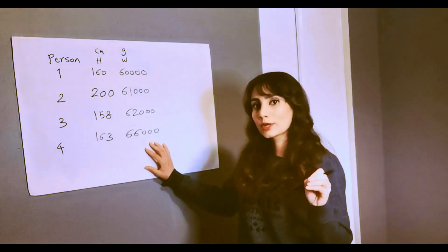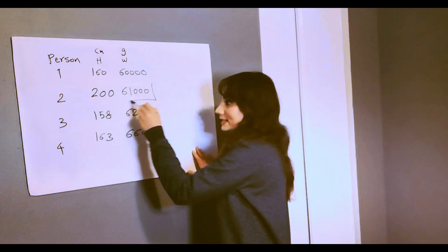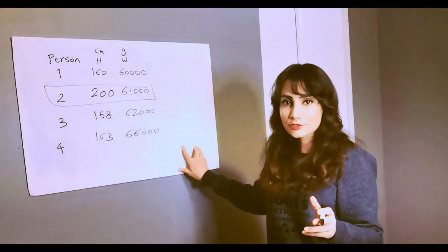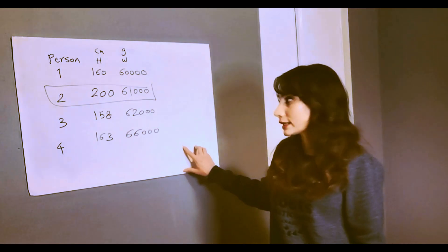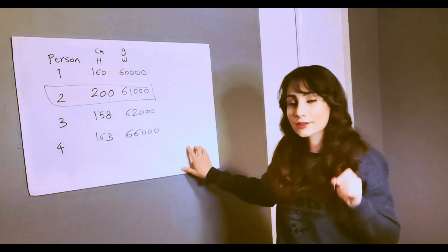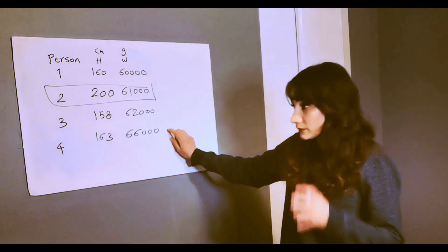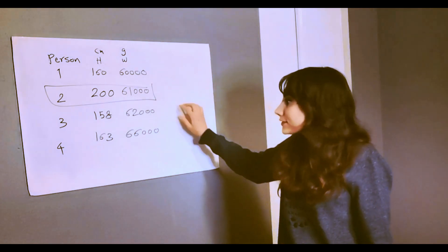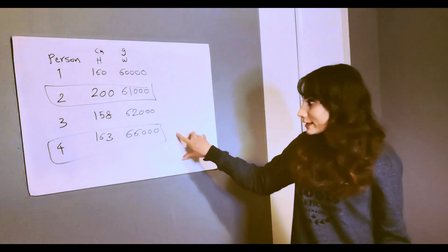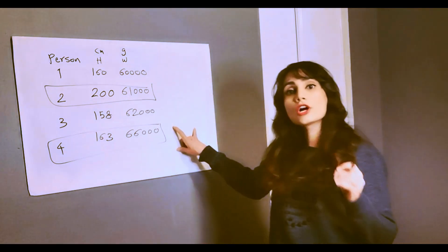Now looking at this dataset from a human point of view — because I understand centimeters and grams — I'm going to say person two is an outlier. Person two is clearly an outlier because they are 200 centimeters tall. The other three people look very similar to each other standing side by side, but person two at 200 centimeters is very clearly different. From a human perspective, I can say that one is an outlier — but the machine will say that is not the outlier, this other one is. Why? Because these numbers are very close to each other.